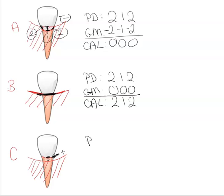Last example, we're going to keep it simple. Probing depth is 2-1-2. The gingival margin, well there's recession now, right? So we have to measure the distance from here to here, from here to here, and from the CEJ to the gingival margin. And let's say when I do that, on the mesial I get a 2, on the facial I get a 1, on the distal I get a 2.